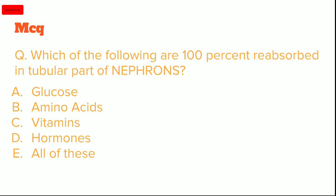An important MCQ, both concept-wise and for exam preparation: 'Which of the following are 100% reabsorbed in the tubular part of the nephron?' Options are: (A) Glucose, (B) Amino acids, (C) Vitamins, (D) Hormones, (E) All of these. The answer is (E) All of these. These four substances — glucose, amino acids, vitamins, and hormones — are 100% reabsorbed.